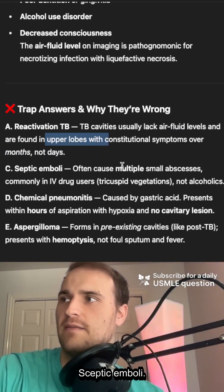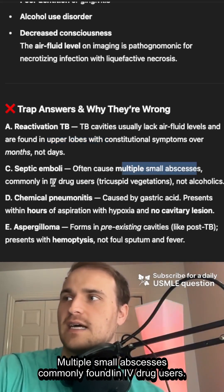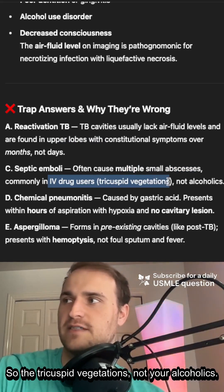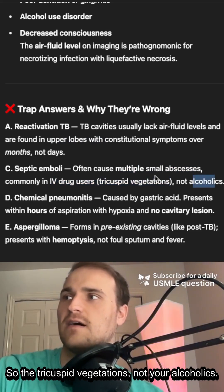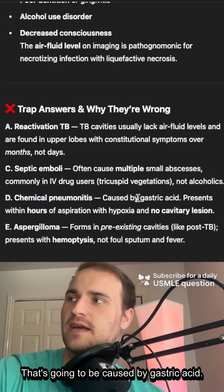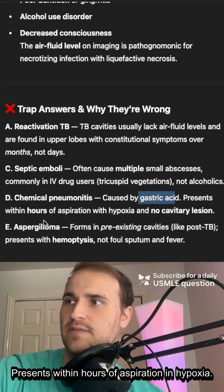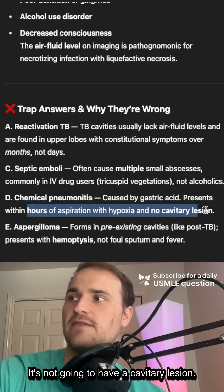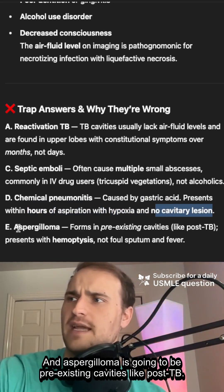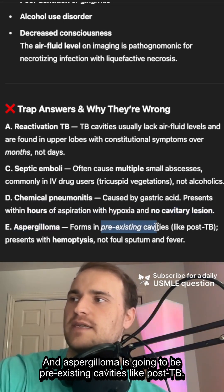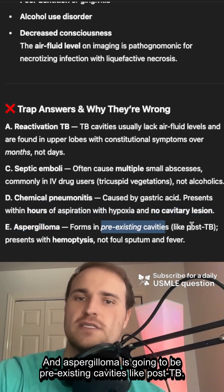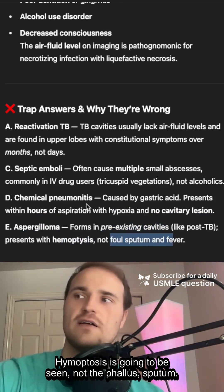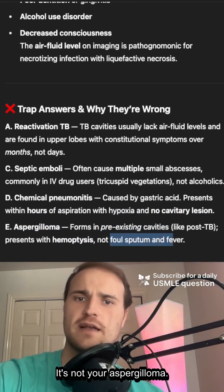Septic emboli cause multiple small abscesses, commonly found in IV drug users — tricuspid vegetation, not in alcoholics. Chemical pneumonitis is caused by gastric acid, presents within hours of aspiration with hypoxia, and won't have a cavitary lesion. Aspergilloma involves preexisting cavities like post-TB, and hemoptysis is seen rather than foul-smelling sputum.